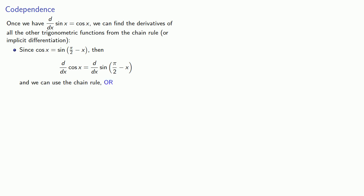Or maybe that's too easy. We can use our Pythagorean identity, sine squared plus cosine squared equals one. If we differentiate it, we can use implicit differentiation and solve for the derivative of cosine.